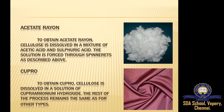Acetate Rayon: cellulose is dissolved in a mixture of acetic acid and sulfuric acid. The solution is then forced through a spinneret, similar to how Viscose Rayon is obtained. The only difference is the chemicals used. The solution obtained from this process is called Acetate Rayon.